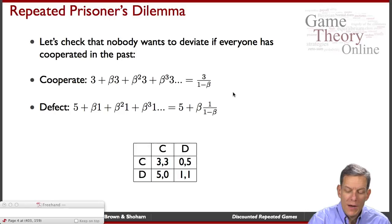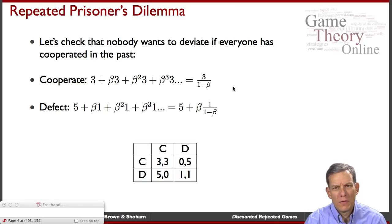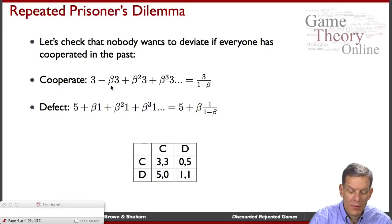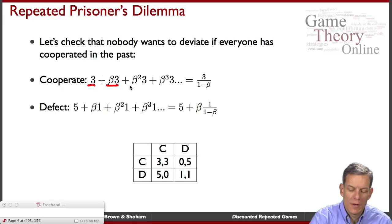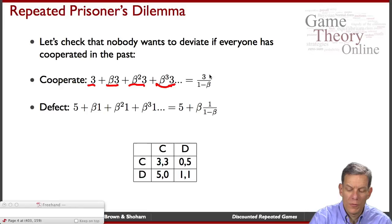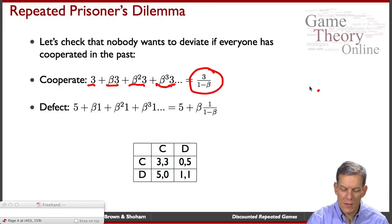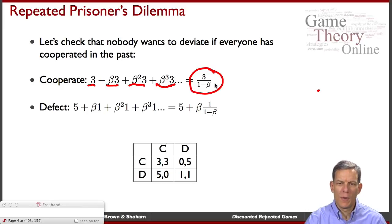If you cooperate and the other player is cooperating — if no one's failed to cooperate in the past — what do we get? We get 3 in perpetuity: 3 plus beta times 3, beta squared times 3, and so forth. If you remember your sum of series, the value of that is just 3 over (1 minus beta).